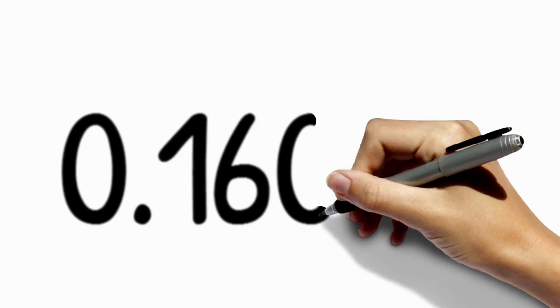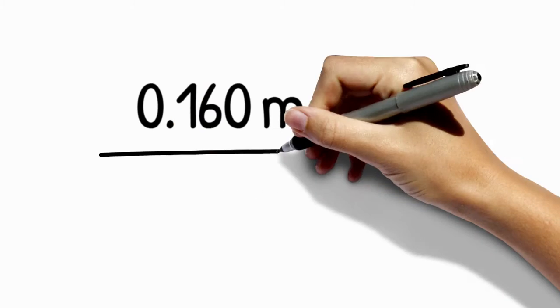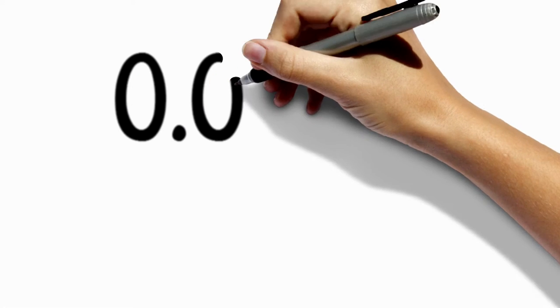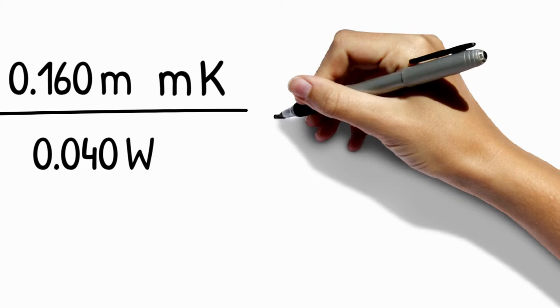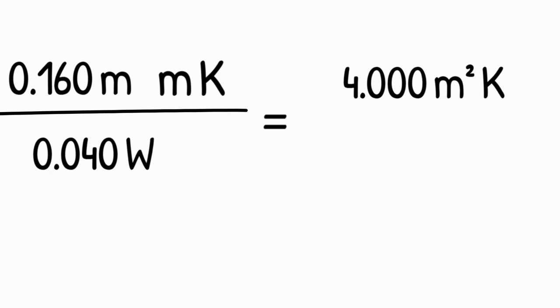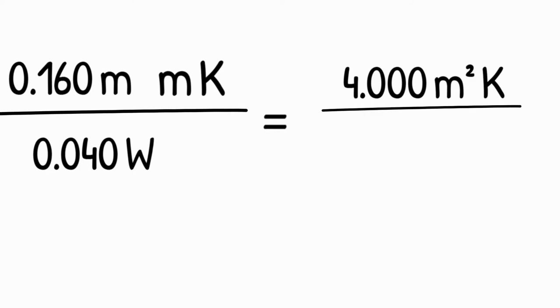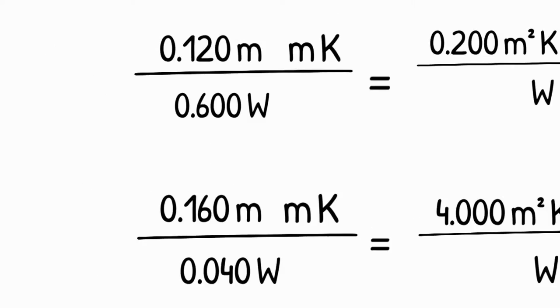Add a layer of insulation in 0.16 meters thickness and put this over the thermal conductivity of this insulation material, which is 0.04 watt per meter kelvin, and we get a resistance of this layer of 4.0 square meter kelvin over watt.